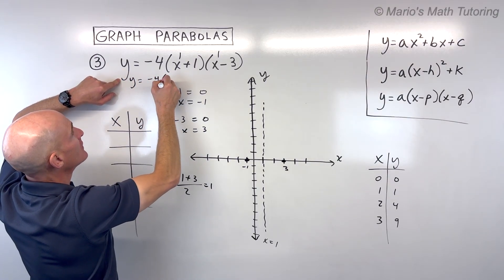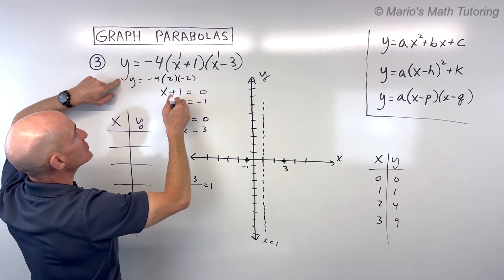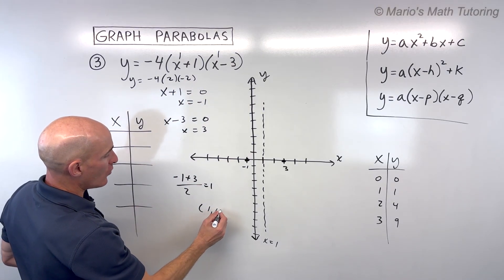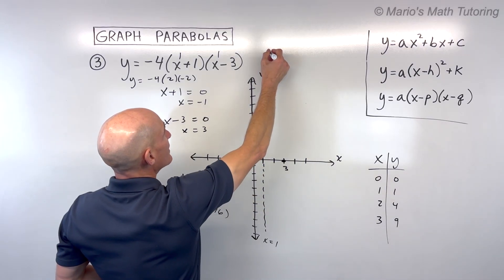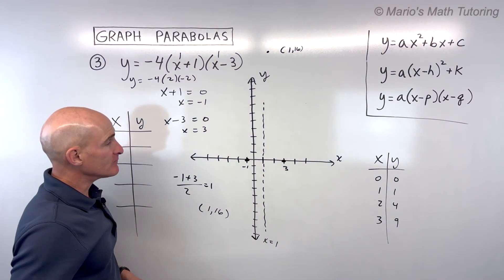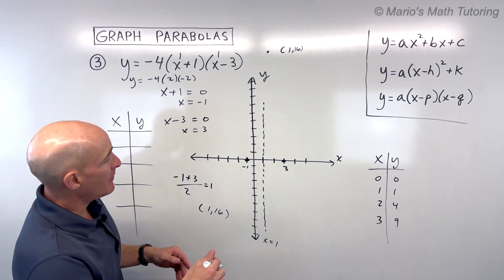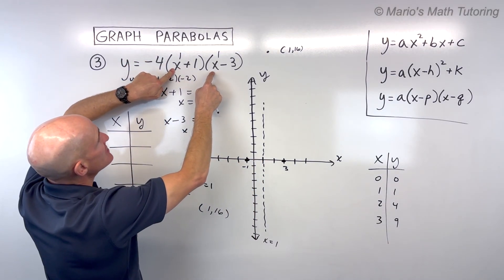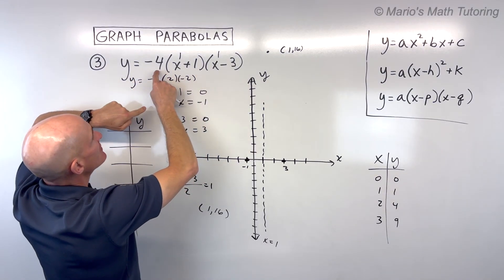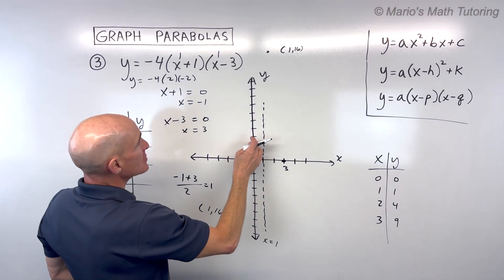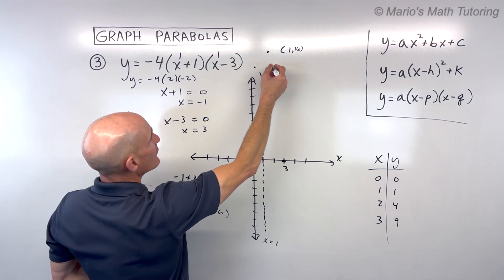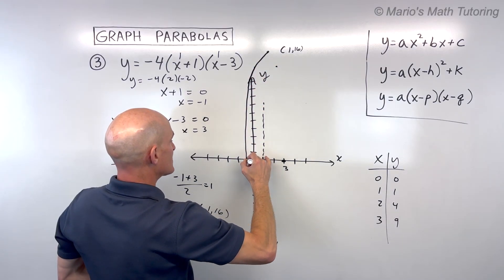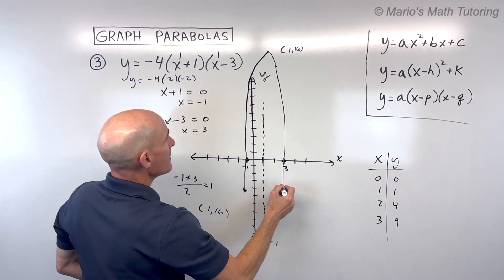So let's do that. We have negative 4. 1 plus 1 is 2. 1 minus 3 is negative 2. That comes out to negative 8 times negative 2 is positive 16. So our vertex here is at 1, 16, way up here. Now we can plot some additional points. One good point is to pick close to the axis of symmetry. For example, if I put 0 in, 0 plus 1 is 1. 0 minus 3 is negative 3. 1 times negative 3 is negative 3. Times negative 4 is positive 12. So over here at 0, you're going to be up here at 12. And if I reflect it over, that's also going to be at 12. So those are a couple other points. This one's kind of going off our graph a little bit, but you can see it's looking something like this. And that's your graph.